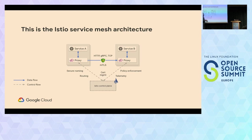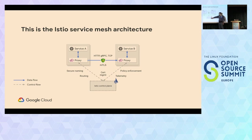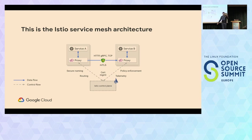This is the first iteration and current iteration of Istio service mesh architecture — still the same. Other tools use different architectures; it's always a control plane and a data plane using proxies. Linkerd uses a different proxy and has their own control plane. Cilium does this with eBPF. But pretty much most service meshes have the concepts of control plane and data plane.